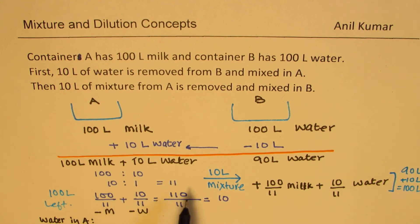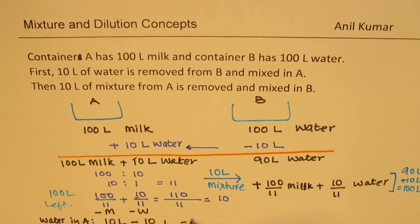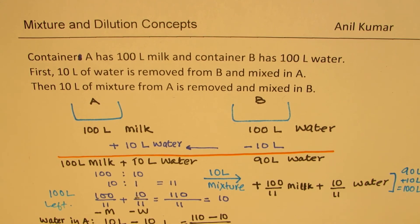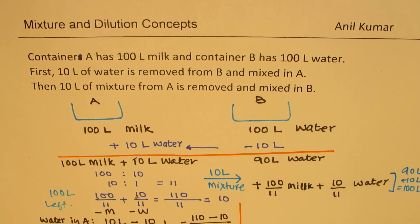As far as water is concerned, previously we added 10 litres, and from that we took away 10 over 11. So we took away 10 over 11 litres. So that means how much water in A? That means 11 times 10 is 110 minus 10, which is 100 over 11 litres. So that much of water is in A.